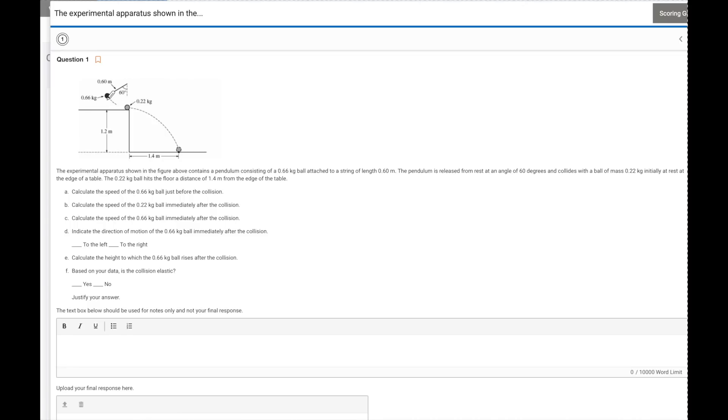Essentially, what's going to happen is we're going to have a pendulum. It's going to swing down and strike this ball, which is then going to create some sort of horizontal projectile. It gives you the height or the distance in the y direction, and it also gives you delta x in the x direction as well, or the range that the ball travels. They give you the mass of the two balls. This is 0.66, this is 0.22. They also give you the angle at which this item is dropped from.